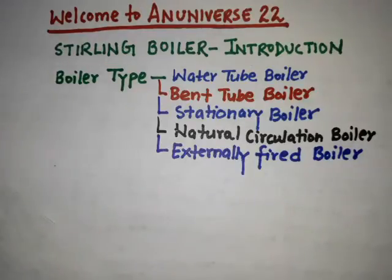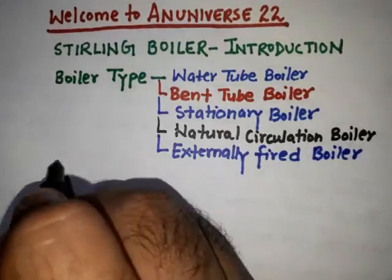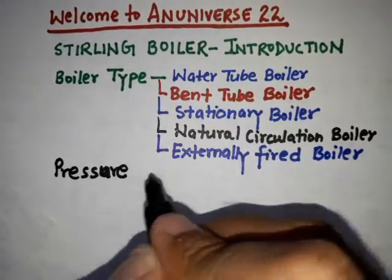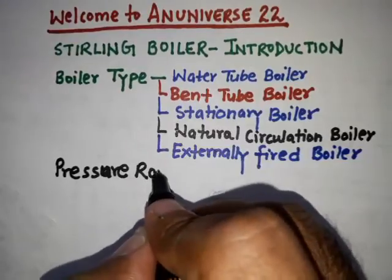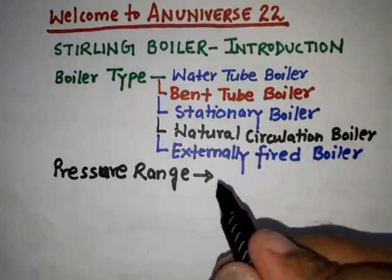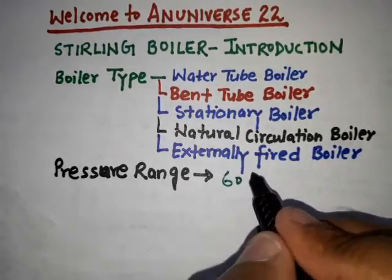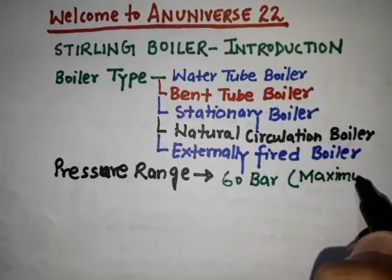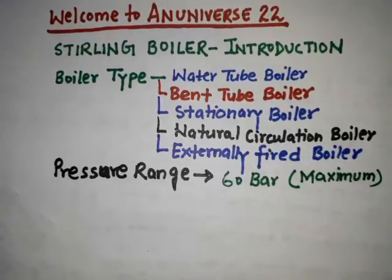So on the basis of boiler type, the main features of the Sterling boiler are: water tube boiler, bent tube boiler, stationary boiler, natural circulation boiler, and externally fired boiler. Now, the pressure range of the Sterling boiler — the maximum pressure is 60 bar.